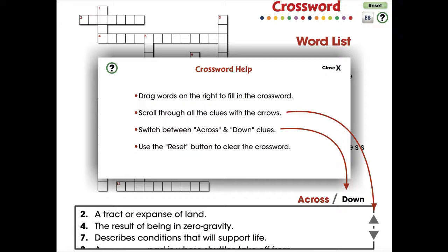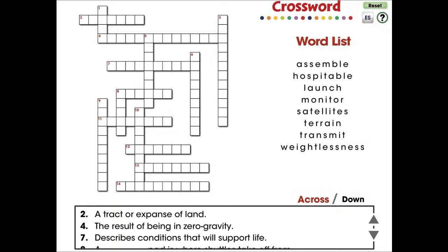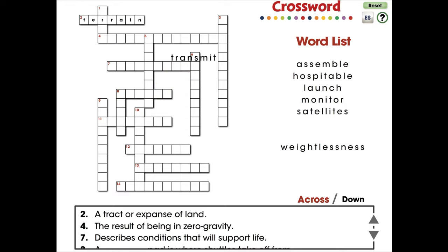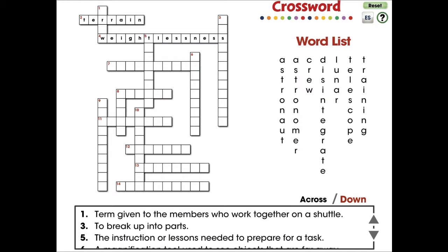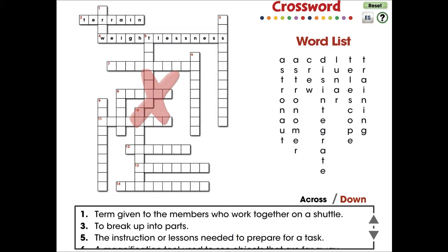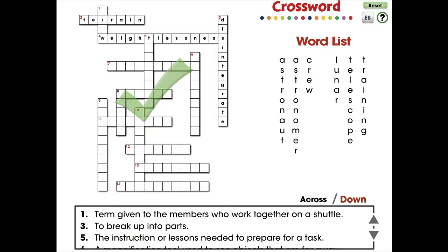In this crossword activity, 15 vocabulary words are provided with across and down clues. For middle school, this mini is great for vocabulary and comprehending all the words centered around the vocabulary in the topic of space travel and technology.